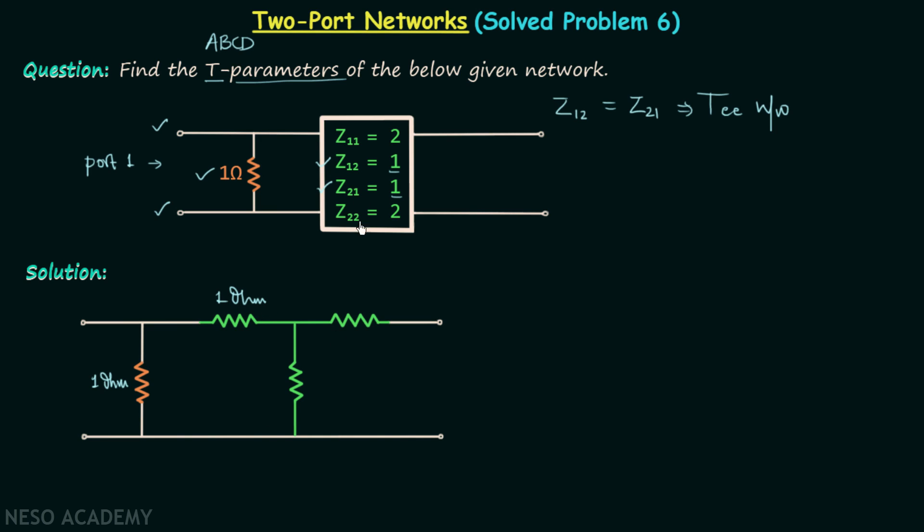This will have the value equal to Z12 or Z21, so we have 1 ohm as the value of this resistor. This will have the value equal to Z22 minus Z12, so 2 minus 1 will give us 1 ohm.